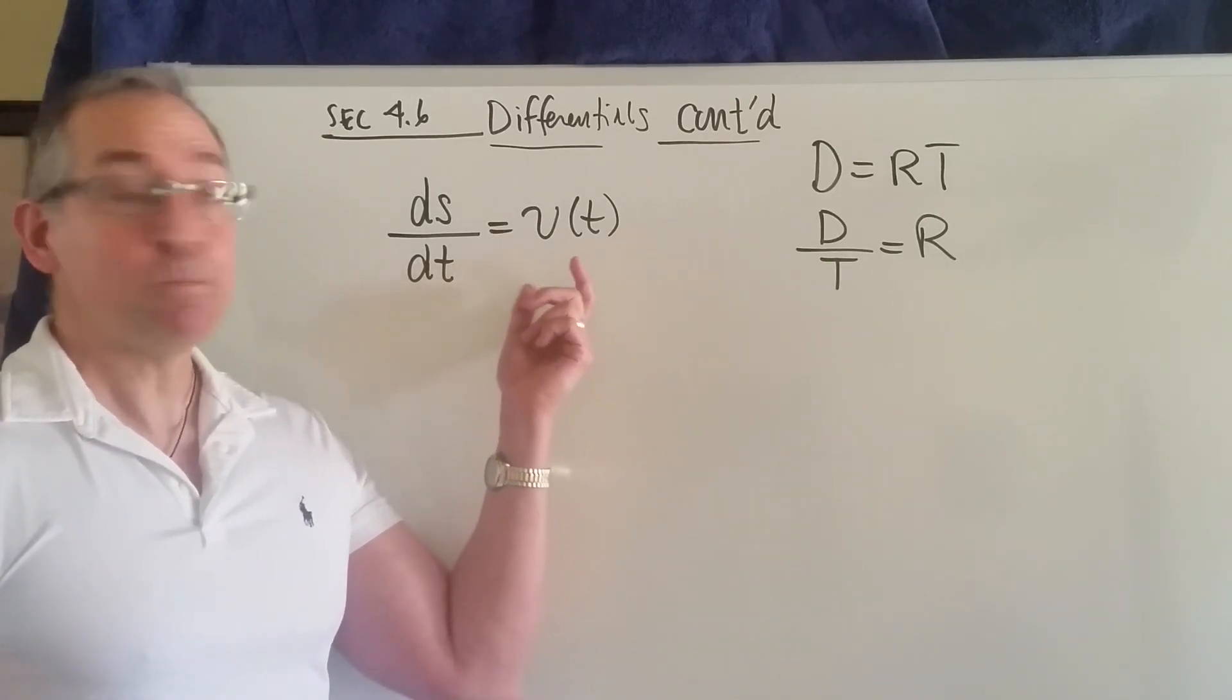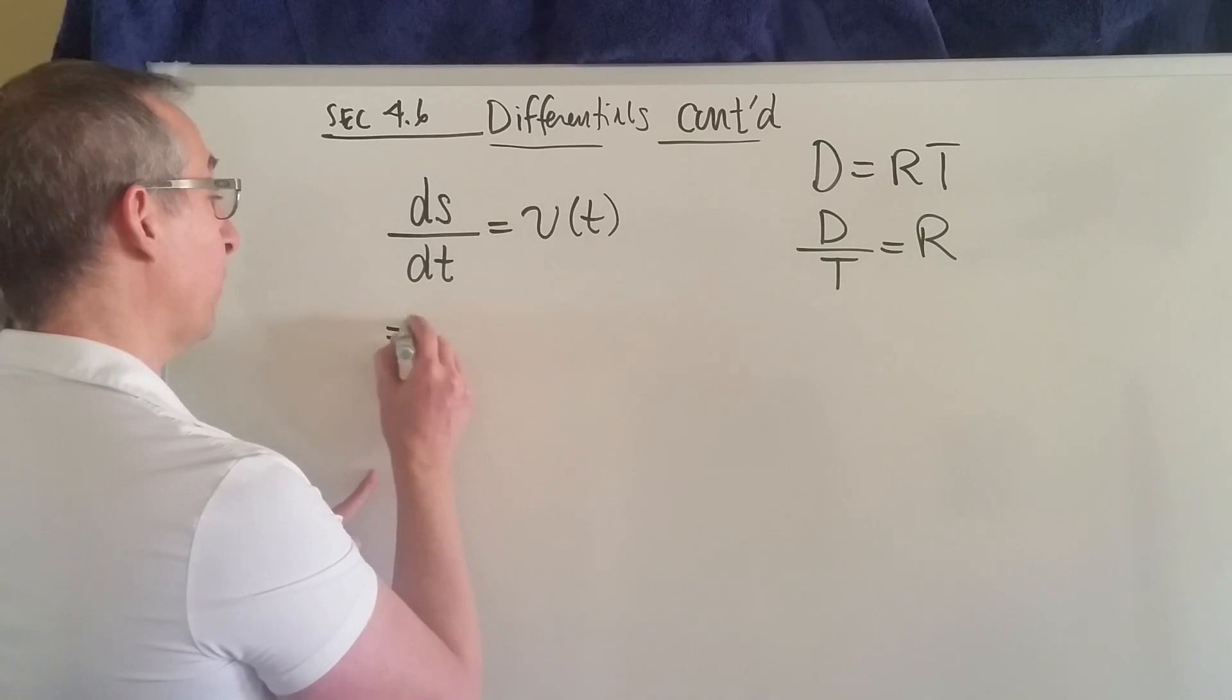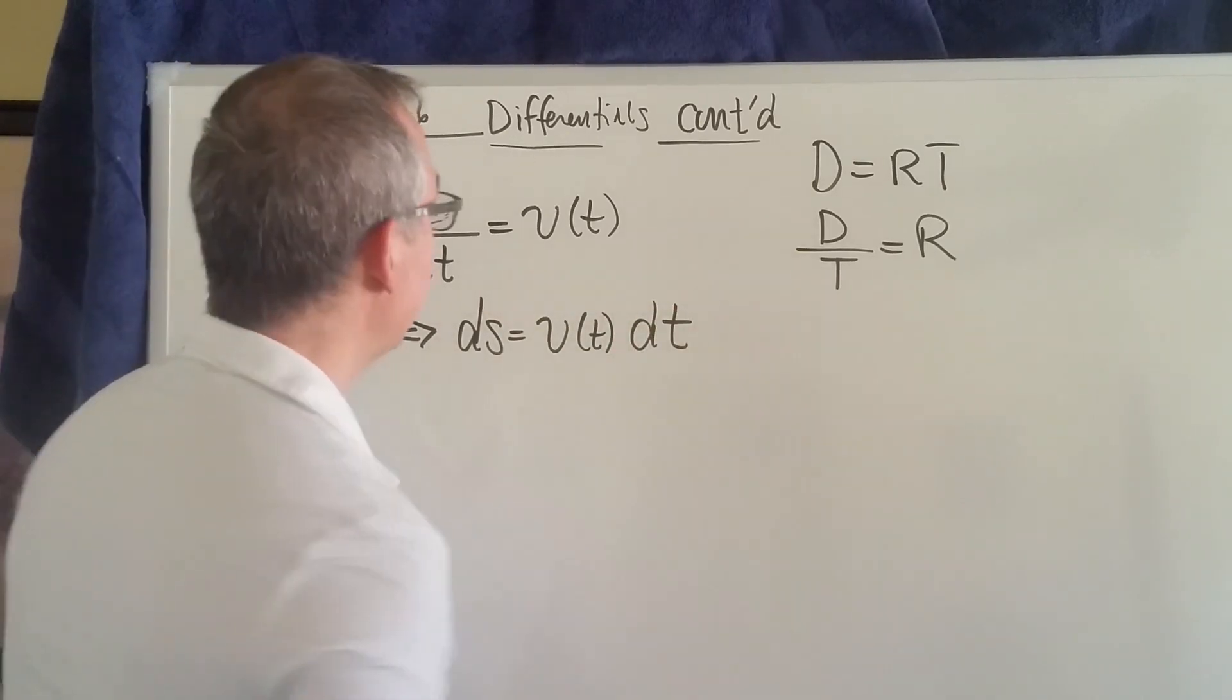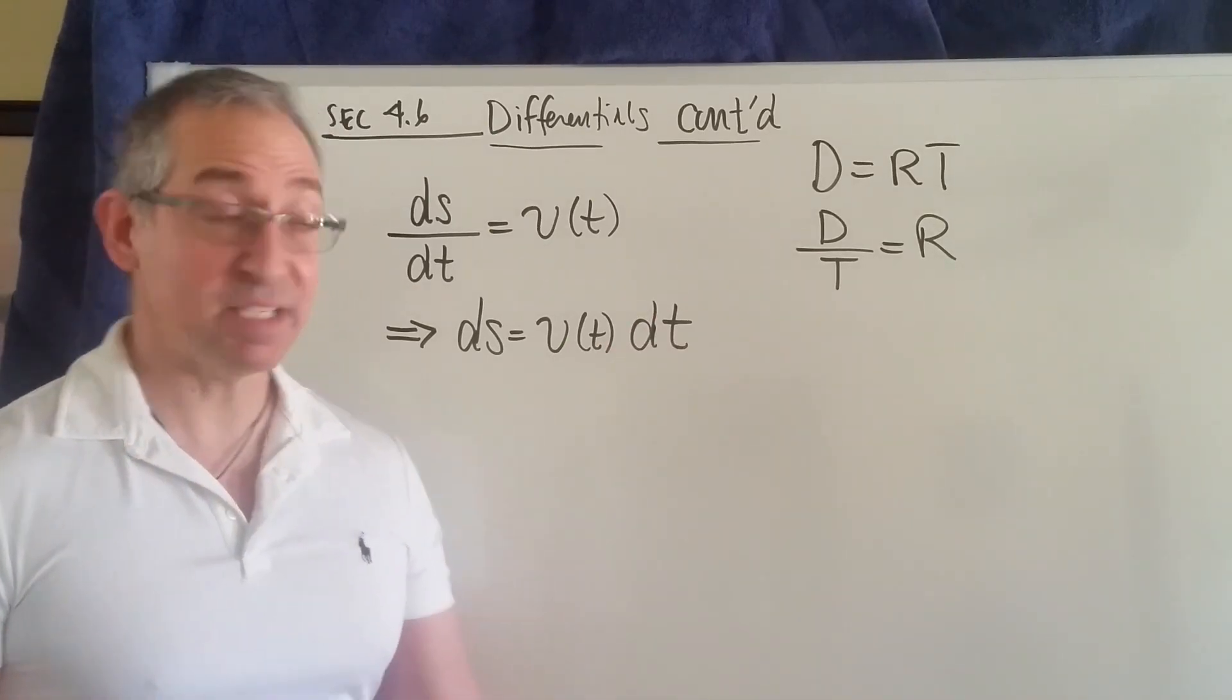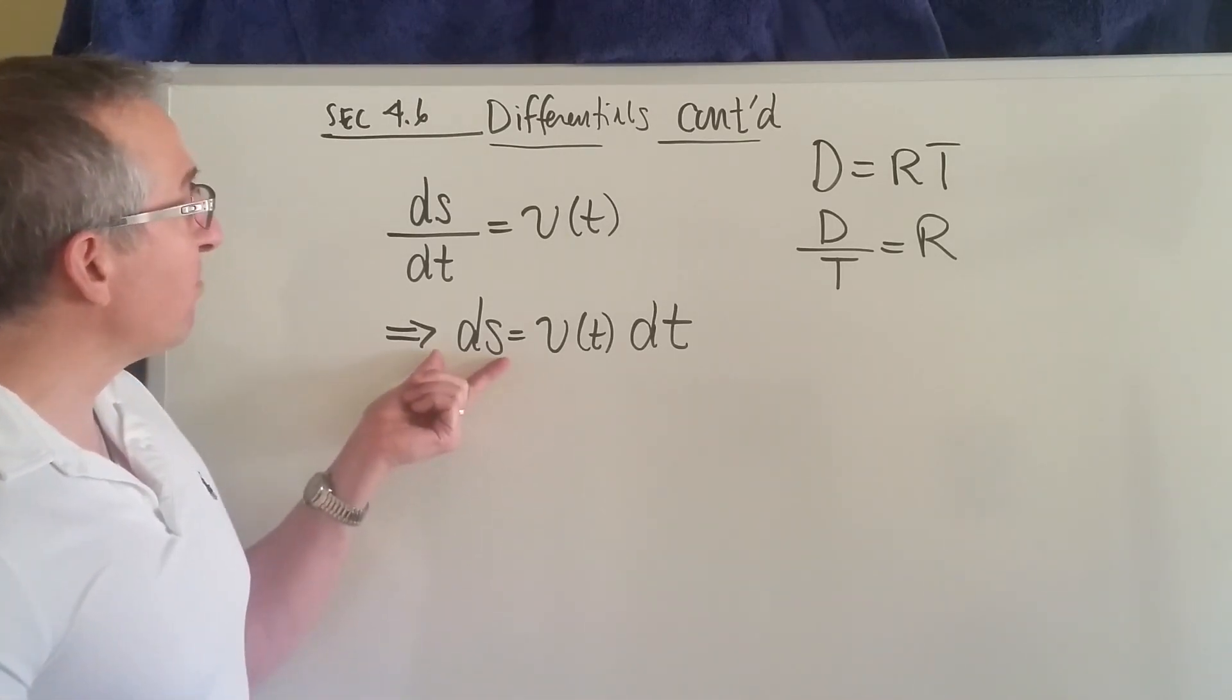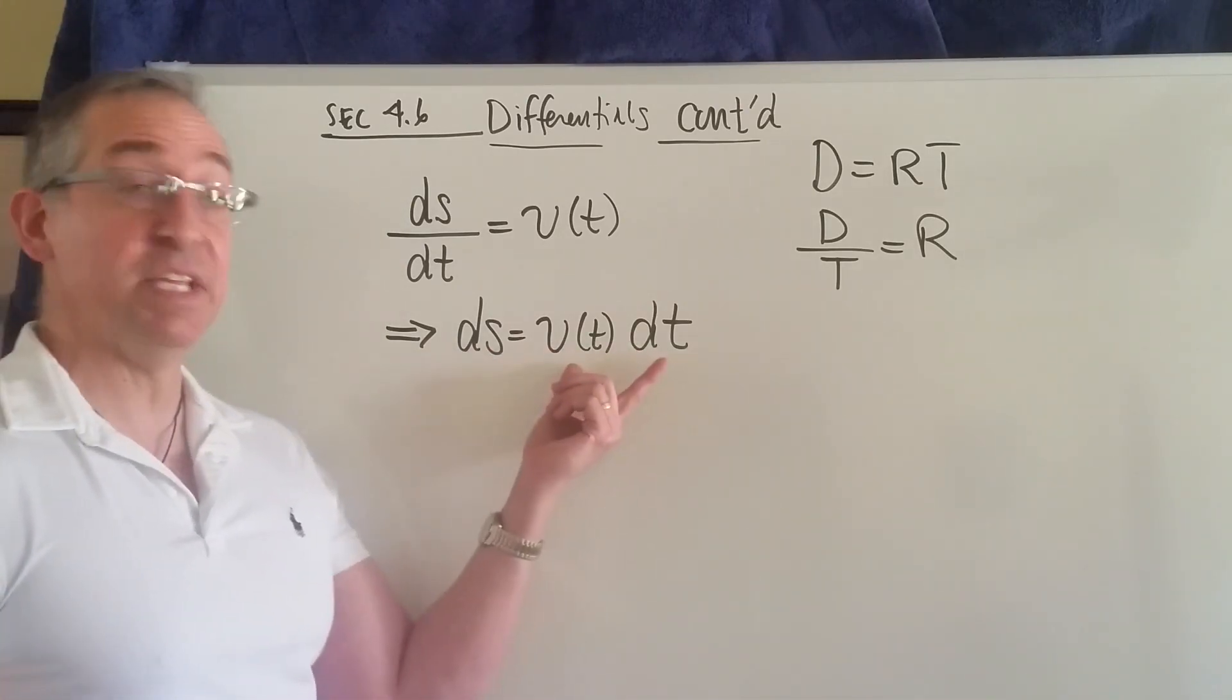Also, something else we can gather from this. I'm going to multiply both sides to clear the denominator. So what I've done is, it's the same equation as it was, but different in appearance. It's equivalent, it's got the same information in it, just conveys it in a different way. This says that the tiny amount of position, the differential of position, is equal to the velocity times the change in the time.